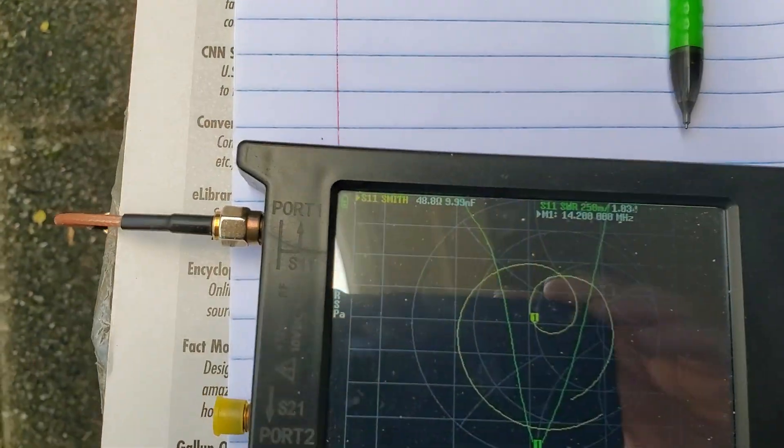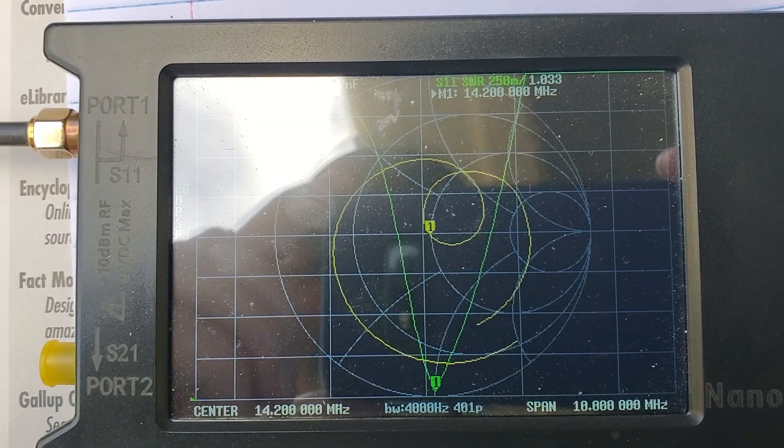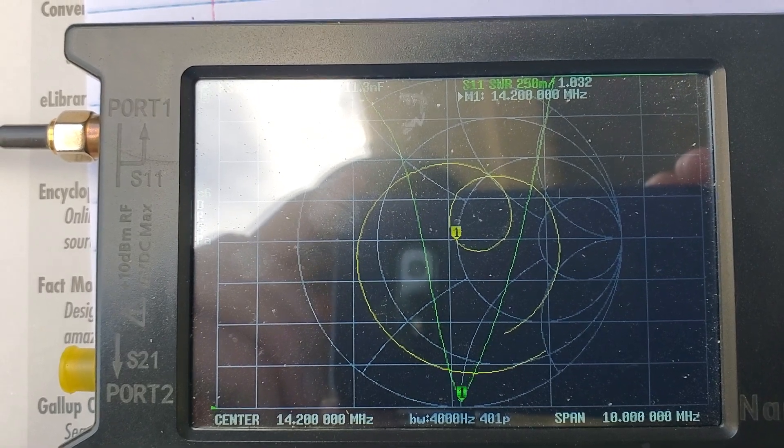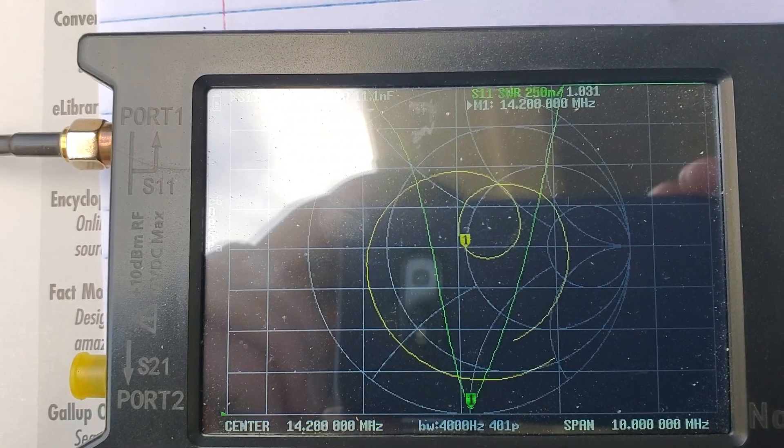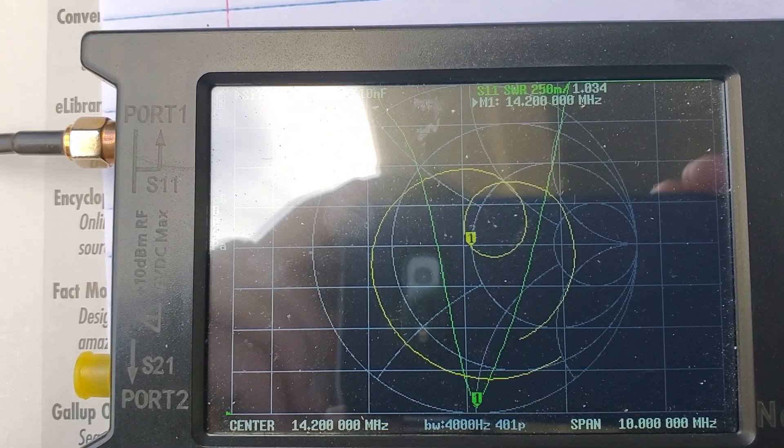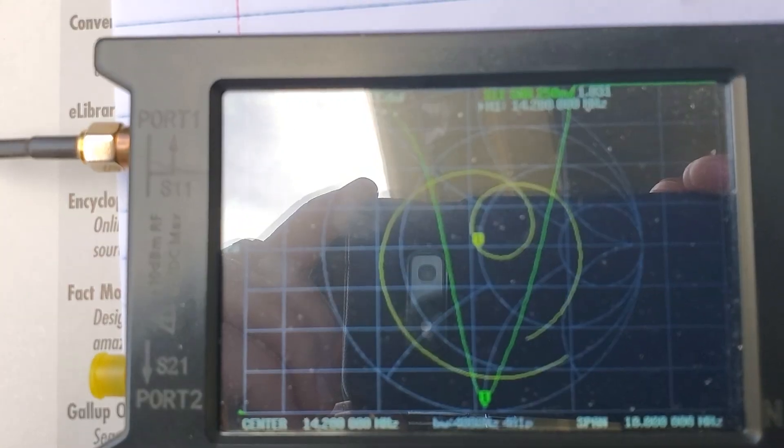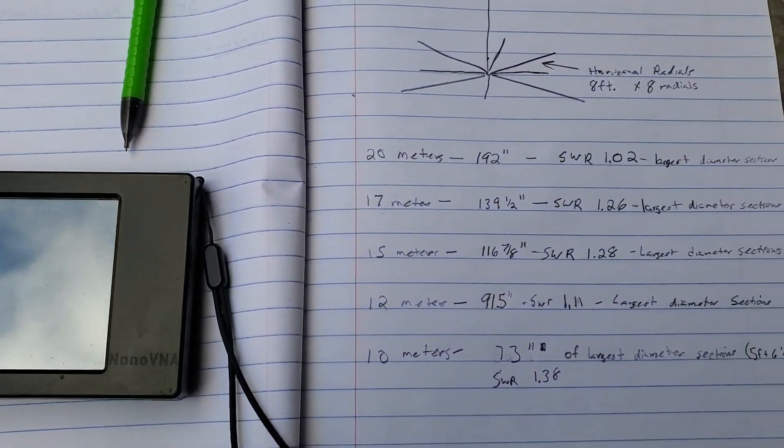here is the antenna right here if I can get it to focus. Right now it's at 1.03. It fluctuates between 1.02 and 1.03, but you can see at 14.2 megahertz the SWR is 1.03, and that covers the entire usable band of 20 meters.